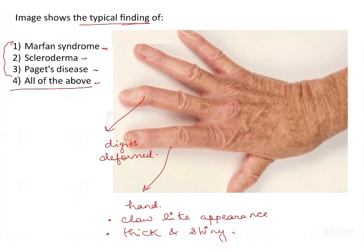But let us try to understand that Paget's disease affects only the skull bone, spine, pelvis, and lower extremities. So it is not going to affect the hands and digits as much as the other diseases. So Paget's disease is a less likely answer, and that is why options 3 and 4 are automatically eliminated.